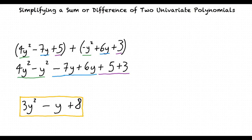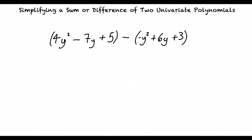In order to subtract these two polynomials, 4y squared minus 7y plus 5 and negative y squared plus 6y plus 3, we will need to use the distributive property on the second polynomial.